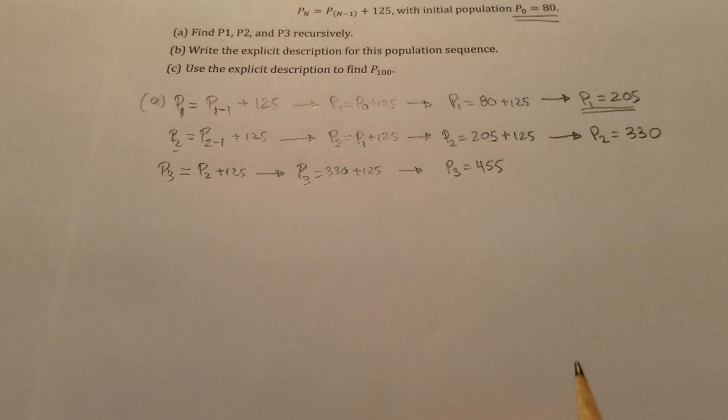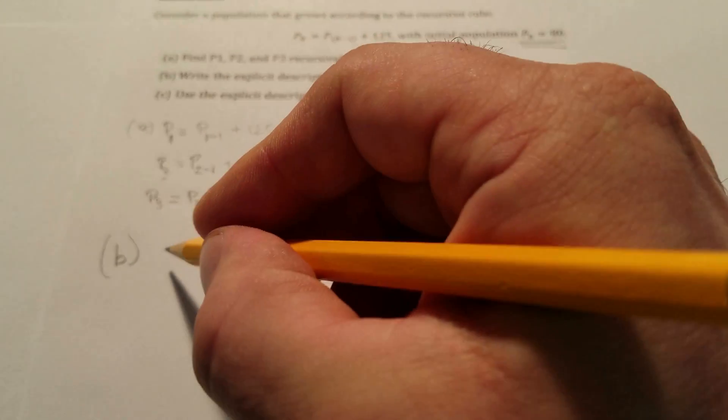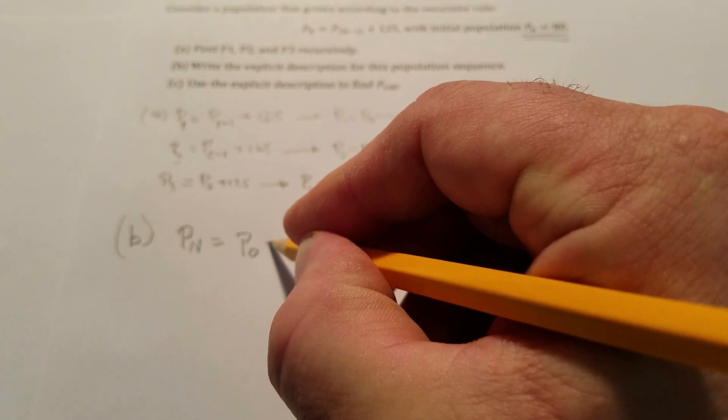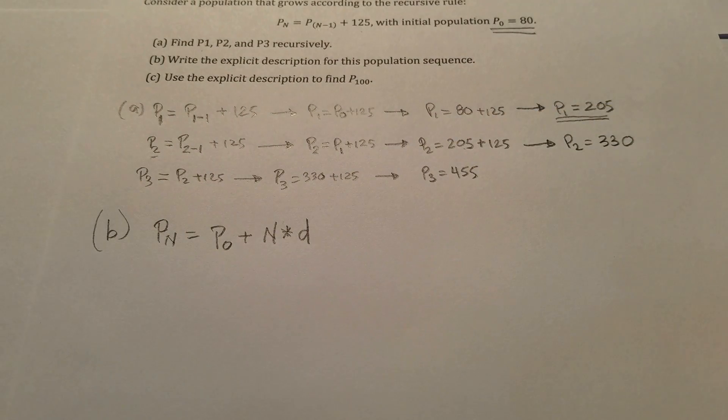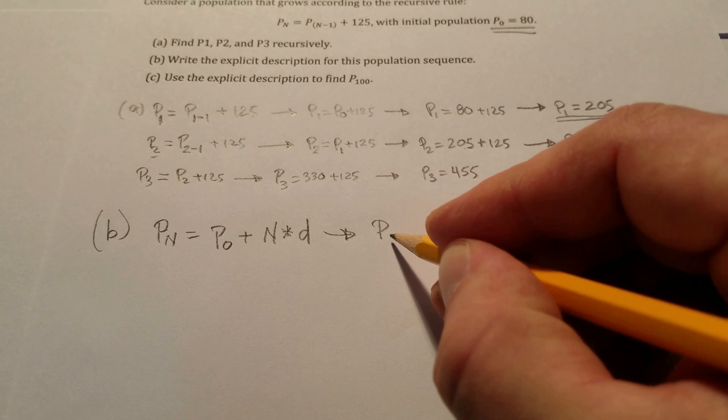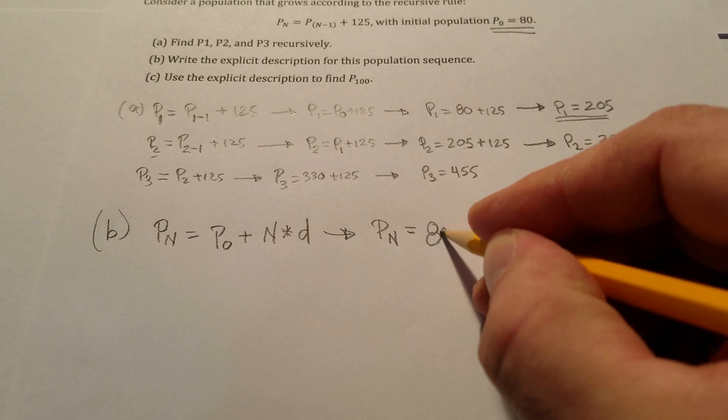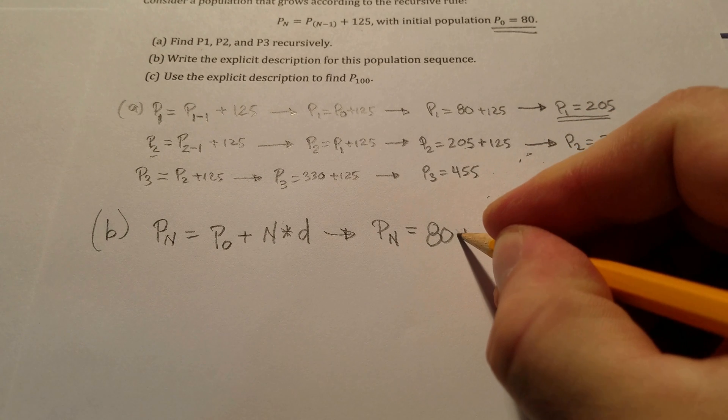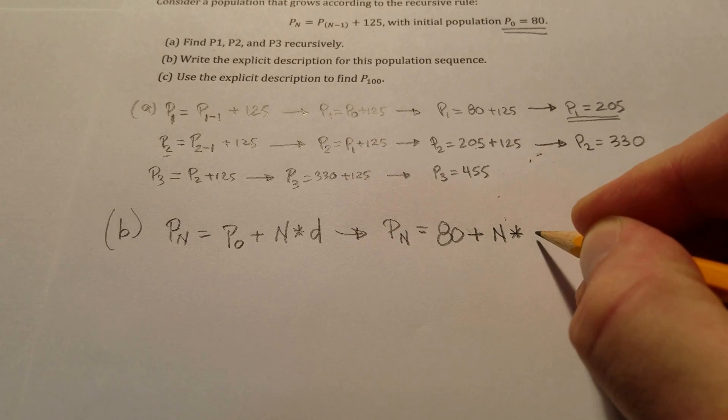Part B asks that we write the explicit description for this population. We're just following the formula. The formula says P_n equals P₀ plus n times the common difference. So if we want to find a population of the nth generation, for this model it would be 80 plus n times 125.